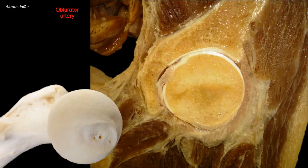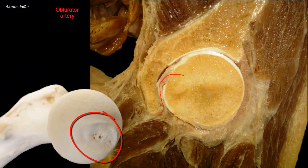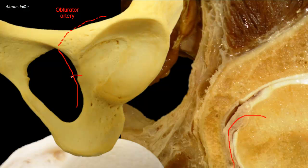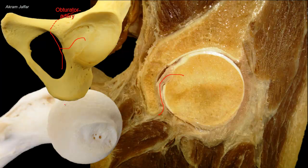Blood may also reach the femoral head through a branch of the obturator artery that runs in the ligament of the head of the femur. Here is the branch of the obturator artery that runs along the ligament of the head, reaching and supplying the head of the femur, because the ligament is attached to the pit or fovea on the head. The obturator neurovascular bundle leaves the pelvis through the obturator foramen to pass into the medial compartment of the thigh. It is at this location that the obturator artery contributes a branch carried by the ligament of the head to reach the head of the femur. The ligament is attached on one side to the fovea and on the other side to the transverse acetabular ligament that bridges the acetabular notch.